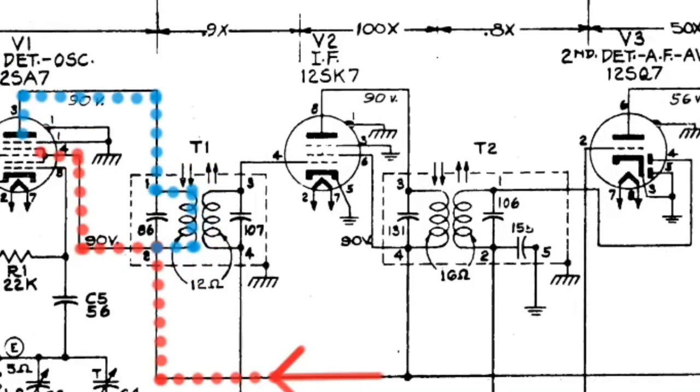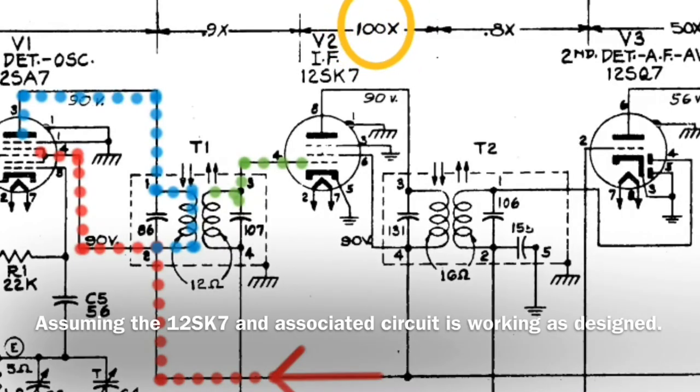You can see if you look at transformer T1 and T2, the primary and secondary are magnetically coupled to each other. The output itself here of the energy is going back over to the grid pin number 4, which is going to be amplified. You can see in this case, one IF amplifier, and the gain here being about 100 times. So there's a lot of amplification that occurs here within that particular tube, the 12SK7.